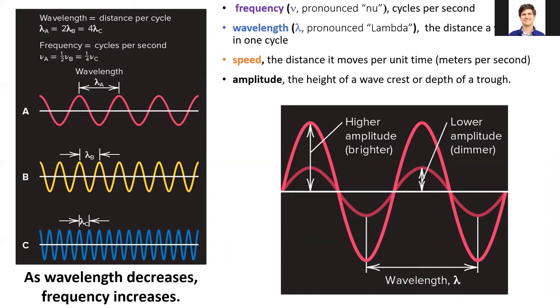Because these three light waves travel at the same speed, this means their frequency increases as we go from red to yellow to blue. As wavelength decreases, frequency increases.